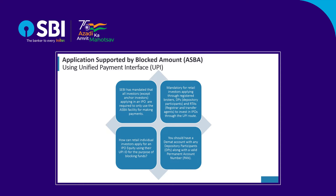You should have a DMAT account with any depository participant along with a valid permanent account number. In order to ensure parity across the various channels for submitting an application, it has been decided that an investor making an application using any of the aforesaid channels shall use only his or her own bank account linked UPI ID to make an application in public issues. Applications made using a third party bank account or third party linked bank account UPI ID are liable for rejection.